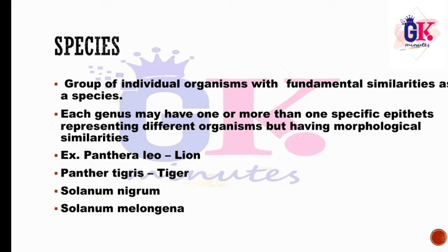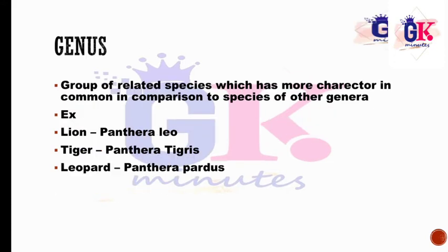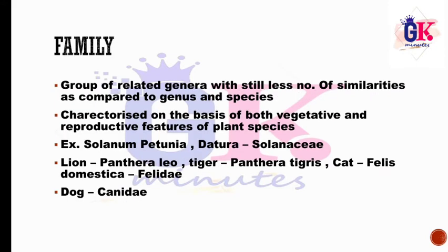A group of related species which has more characters in common compared to species of other genera forms a Genus. For example, lion (Panthera leo) and tiger (Panthera tigris) — the two species share the same genus Panthera and some common characters. The next category, Family, is a group of related genera with still fewer similarities compared to genus and species.